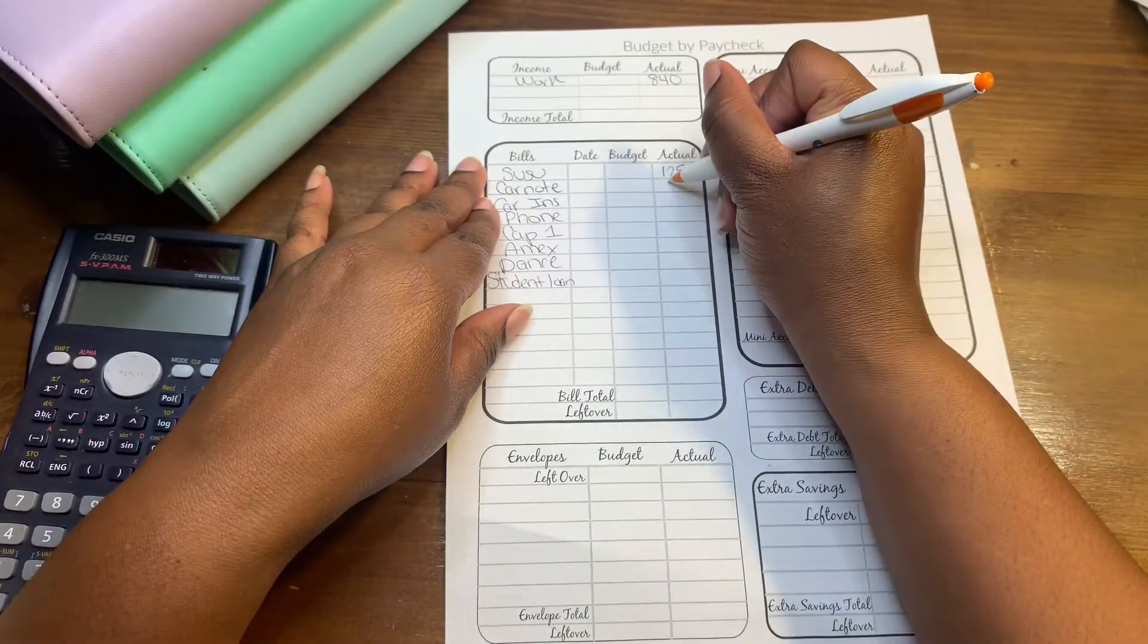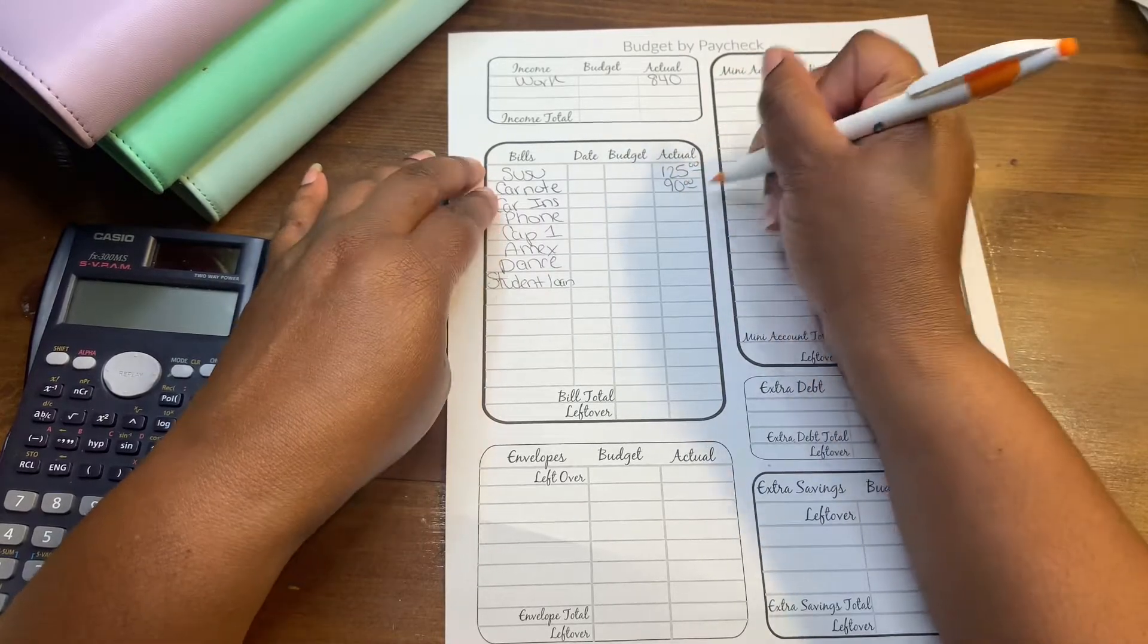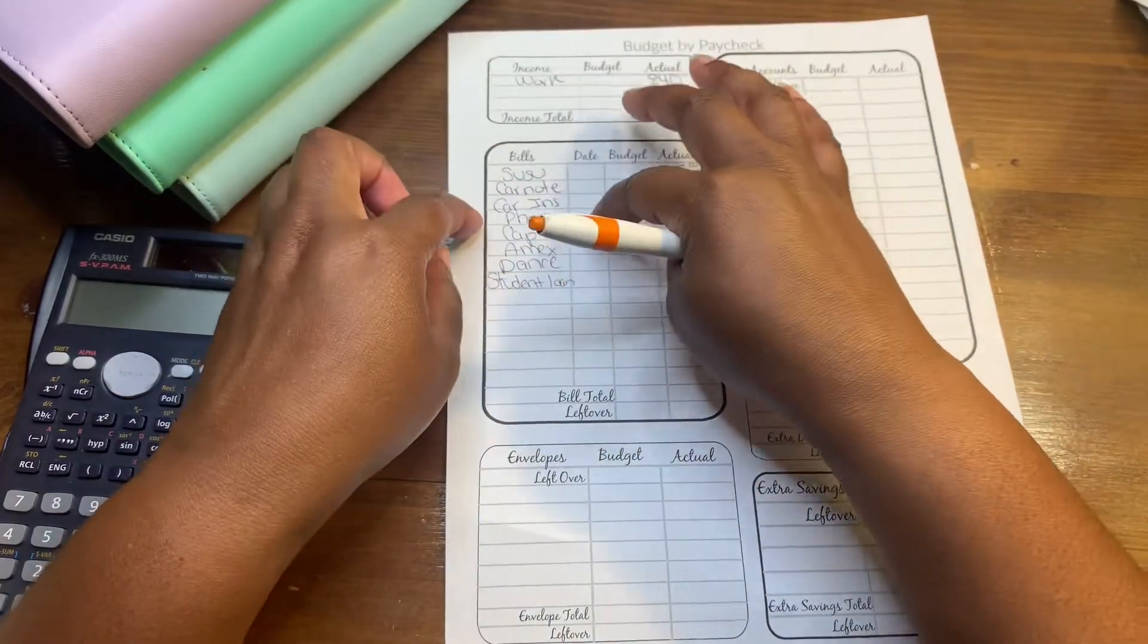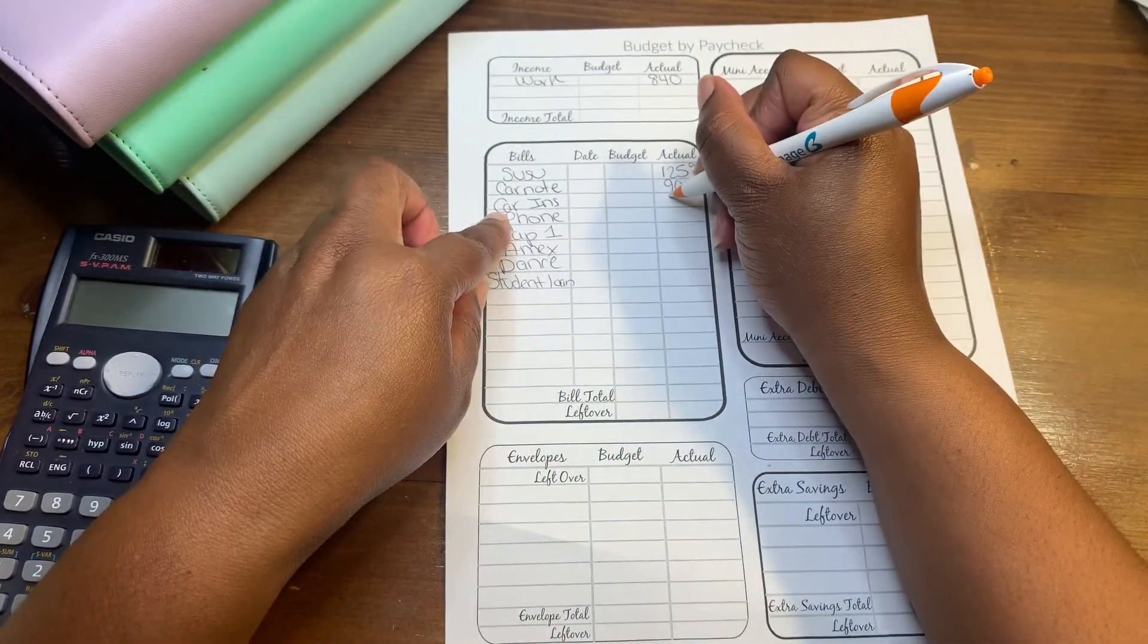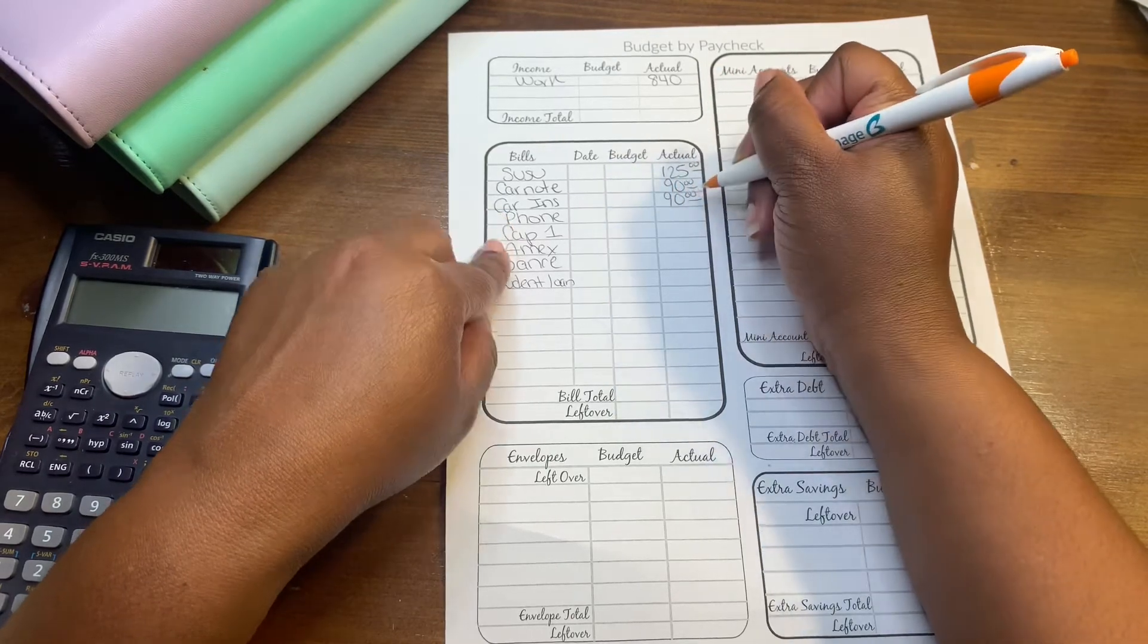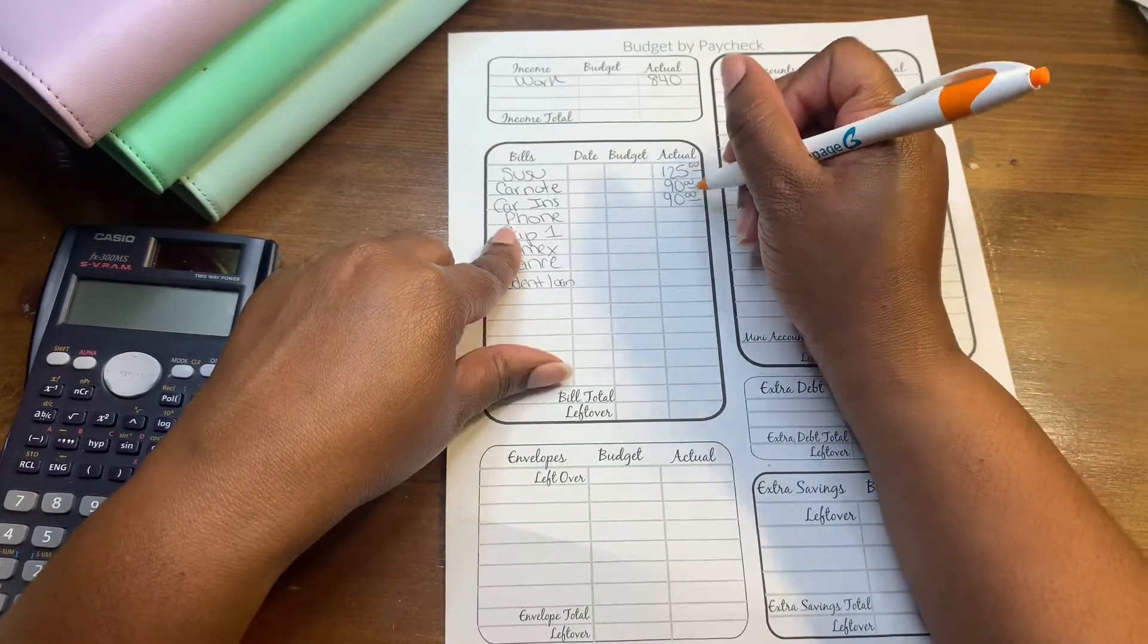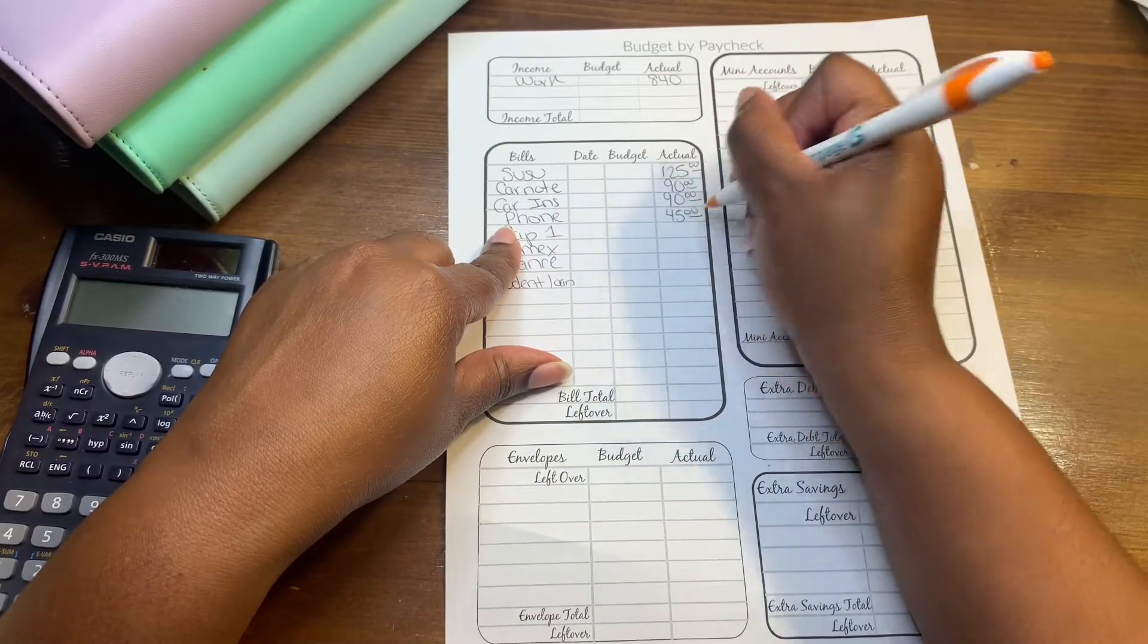The car note is $90 as usual. The car note and car insurance I split into four for each week because I get paid weekly. The car insurance is also $90.